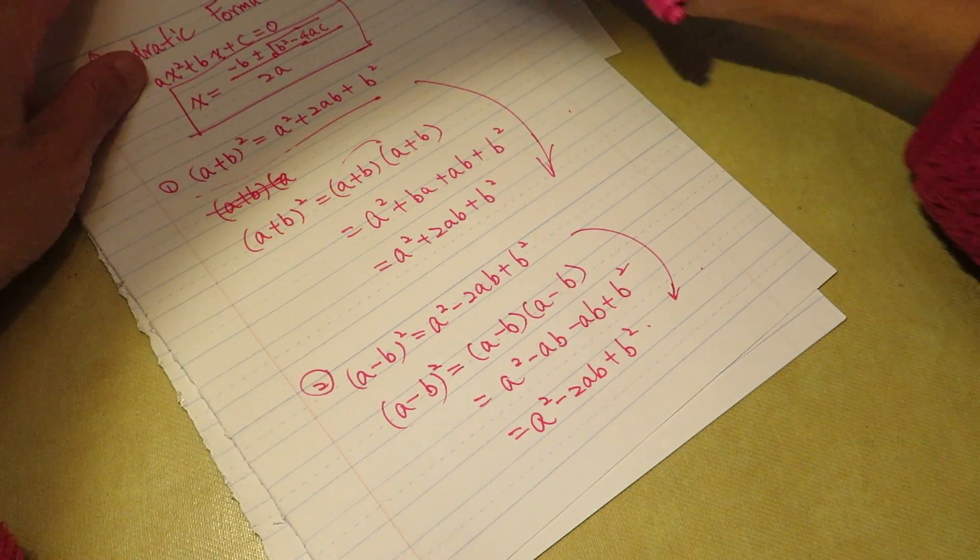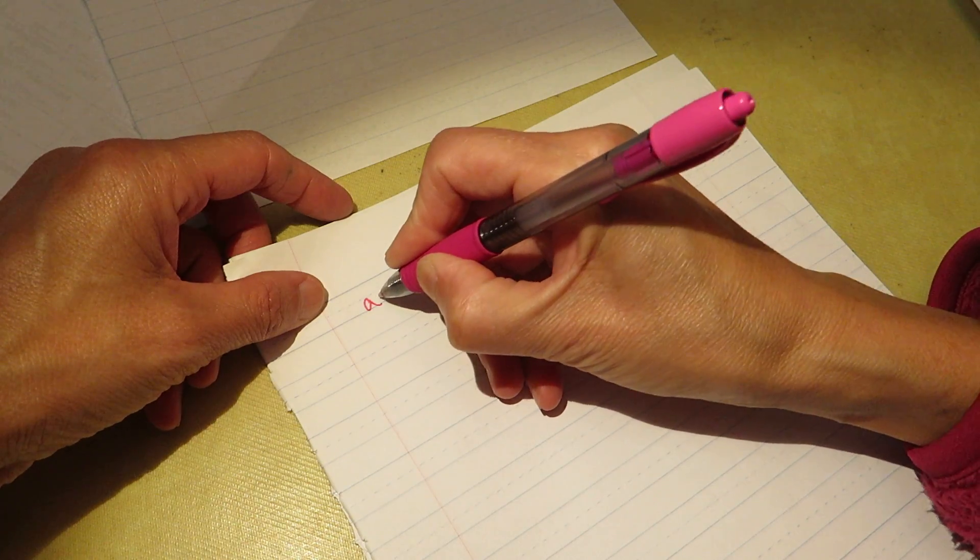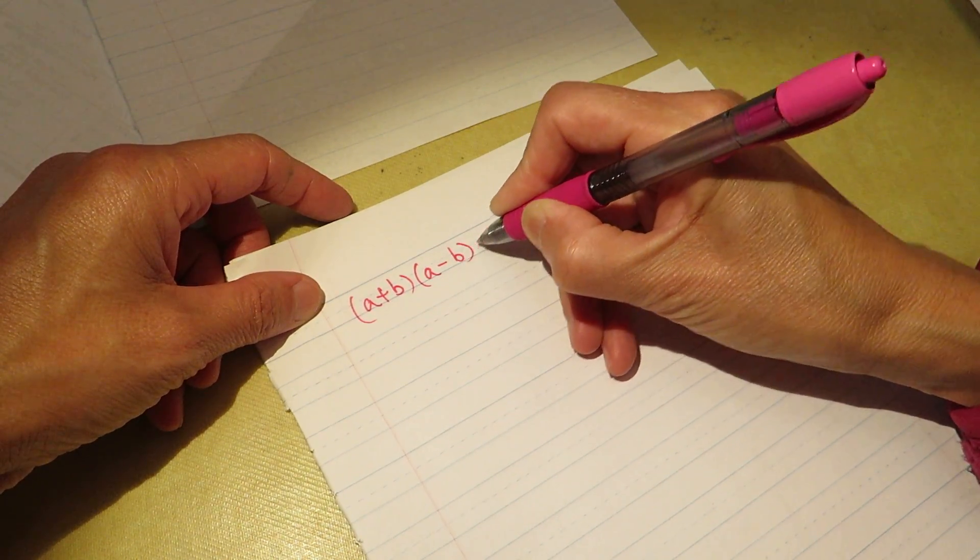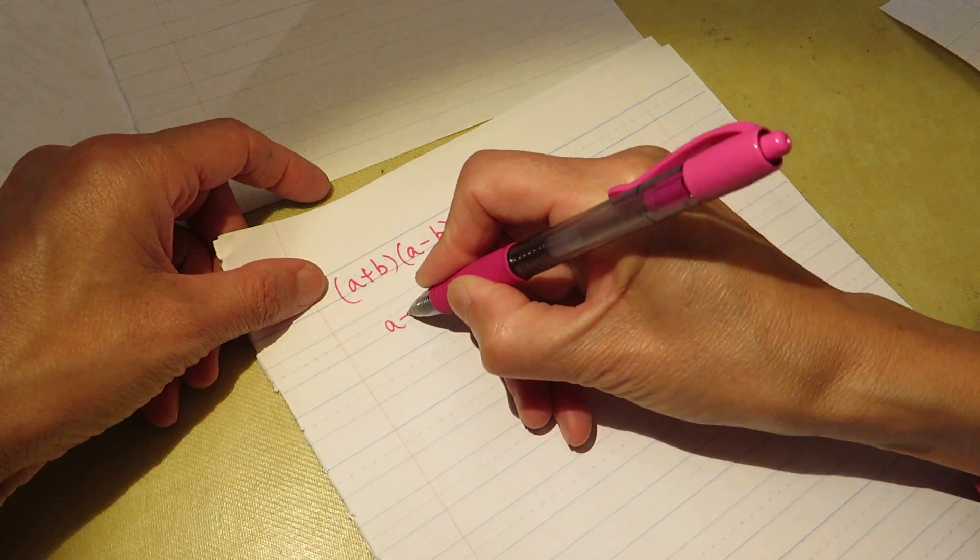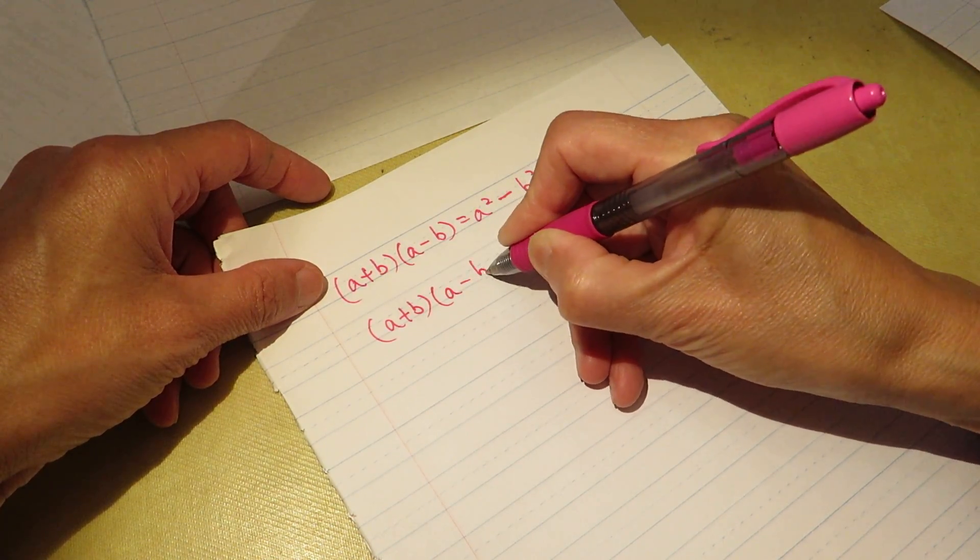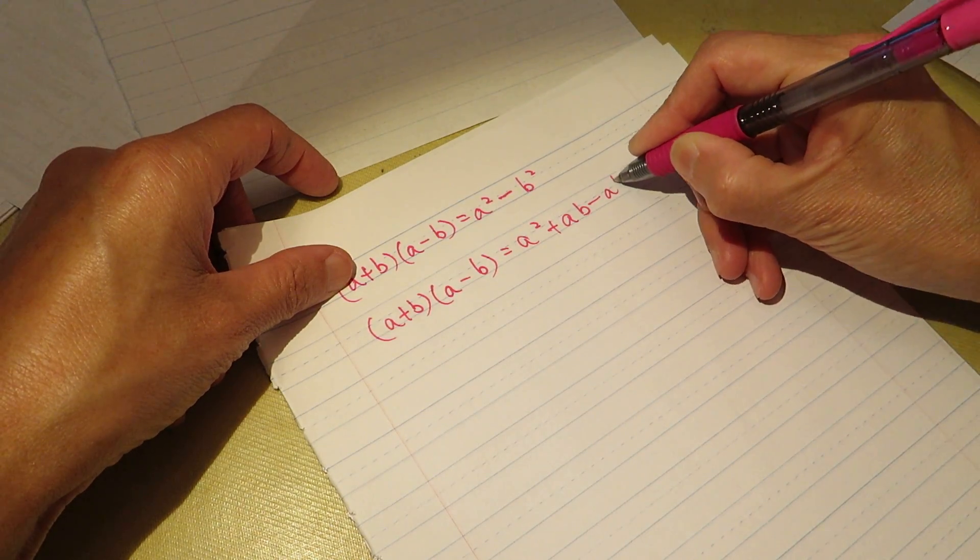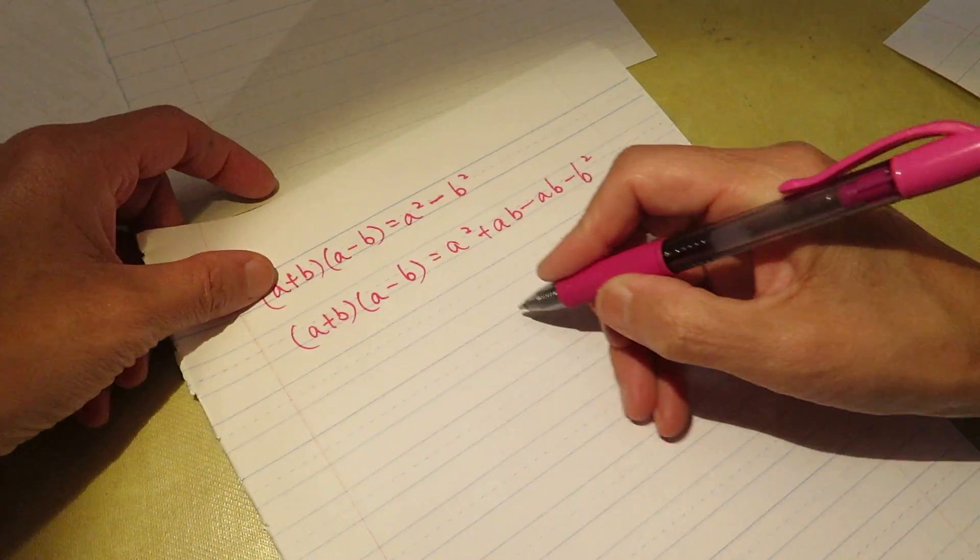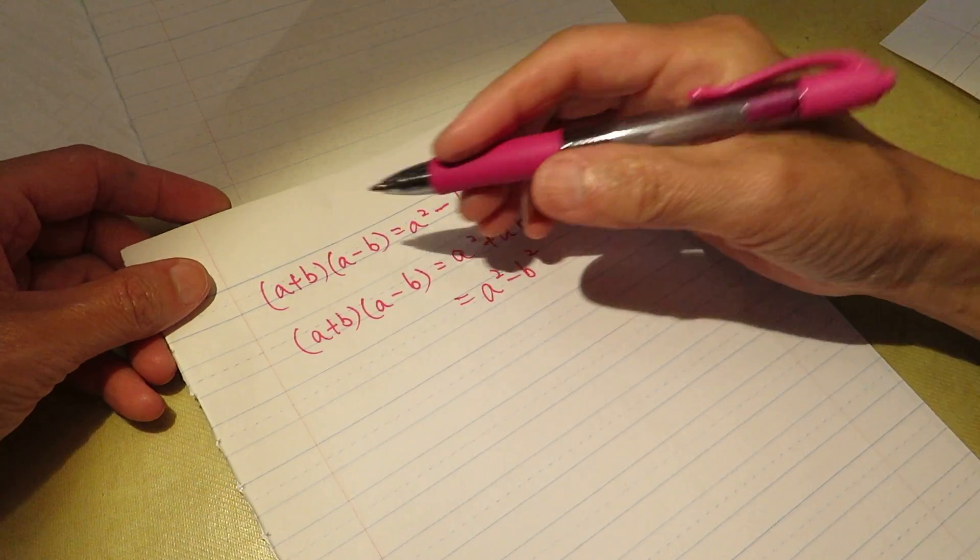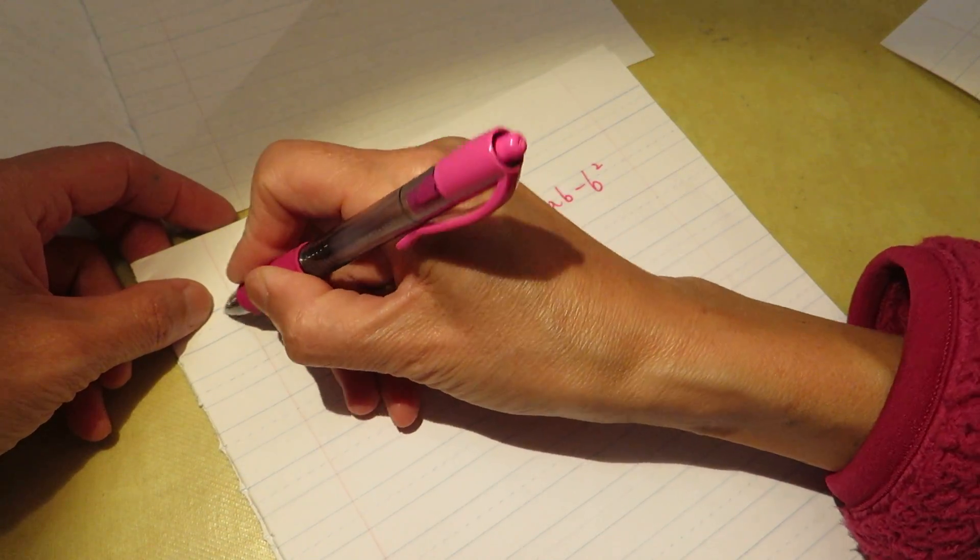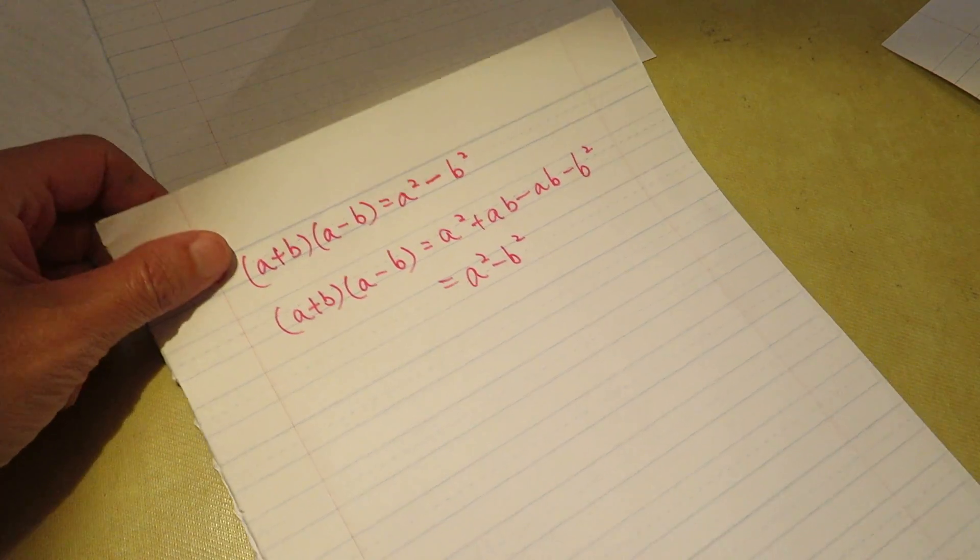You get the same solution. And the third one you need to know is (a plus b) times (a minus b) equals a² minus b². How do I get this? (a plus b)(a minus b) equals a² minus b². So all these you have to remember, the three of these formulas you have to remember.